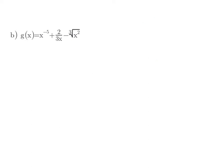In example B, we have three terms that need to be differentiated, but once again we need to do some rewriting first. Our first term is in the correct form. Our second term has x in the denominator and that needs to change, so I am going to rewrite that x as x to the power of negative 1, which can be written in the numerator or next to the fraction. My third term has a cube root that I am going to rewrite as x to the power of 2 divided by 3. Now I can go and calculate the derivative.